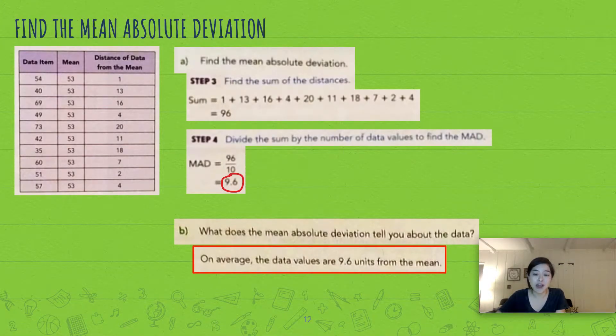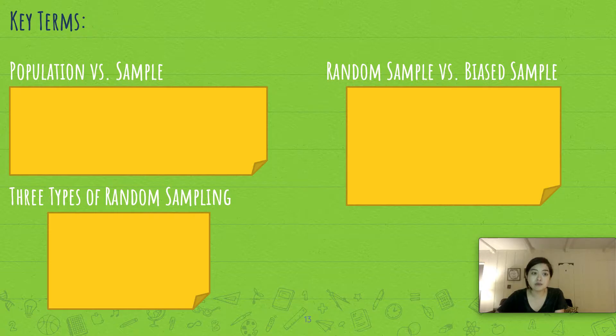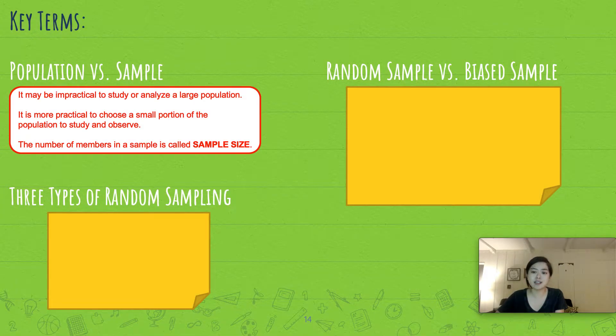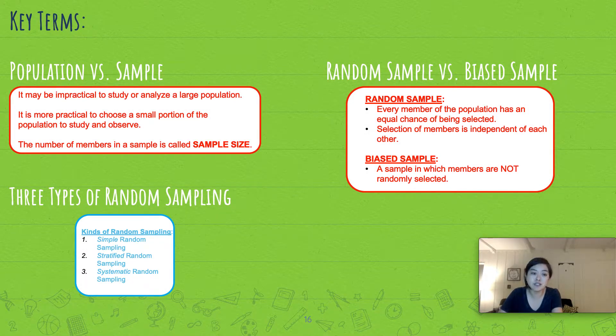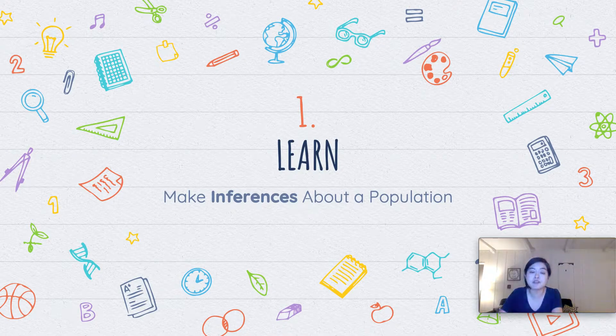What does the mean absolute deviation tell you about the data? Well, on average the data values are 9.6 units away from the mean. We've also learned about these key terms: population versus sample. It may be impractical to study or ask survey questions with the population or analyze a large population, so you might want to take a sample. We have random sample versus biased sample. A biased sample is something you don't want because they're not representative of the actual population. A random sample basically means that every member of the population has an equal chance of being selected, and we learned about three types of random sampling: simple random, stratified, and systematic.